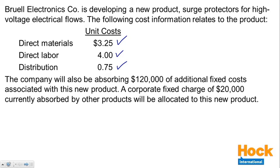We're looking at break-even point — how many units do we have to sell to break even? We have $120,000 of additional fixed costs associated with this new product; these are the fixed costs that this product itself needs to recover. The $20,000 corporate fixed charge is already being spent by the company — whether we produce this new product or not, it's going to be incurred either way. So this $20,000 is a fixed cost we can ignore when calculating the break-even point for these surge protectors.